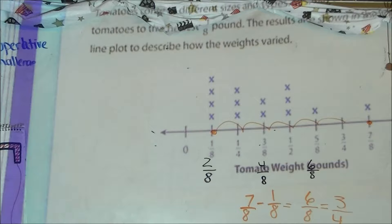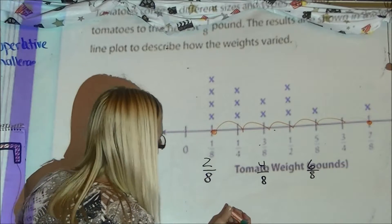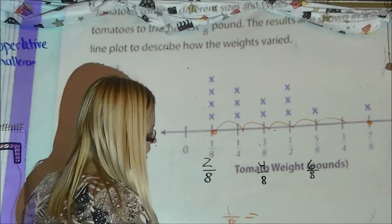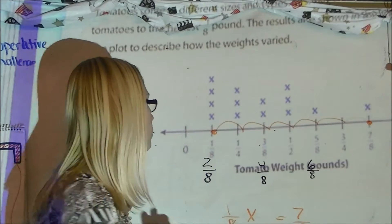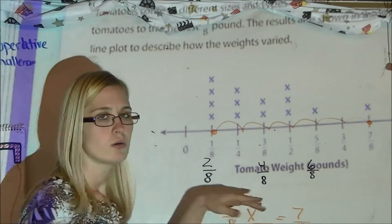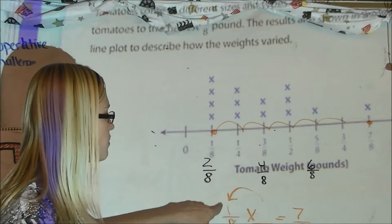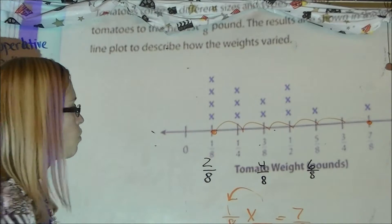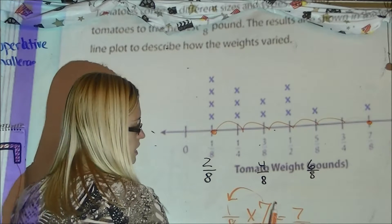Looking at the last question on this page, letter F: how many times the weight of the lightest tomato is the heaviest tomato? My lightest is 1/8 and my heaviest is 7/8. I need to figure out what whole number I would multiply by 1/8 to get 7/8. When multiplying by a whole number, it's the whole number times my numerator, with the denominator staying the same. 1 times 7 is 7, denominator stays the same — the heaviest is 7 times greater.